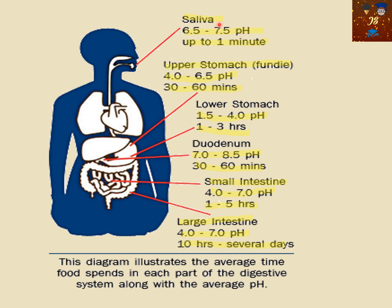For saliva, the pH is 6.5 to 7.5. The higher the pH, the more alkaline the solution — so saliva is slightly acidic in nature at 6.5. Food resides in the mouth for about one minute. From there, food comes to the upper stomach, called the fundus, where it resides for one hour at a pH of 4.0 to 6.5, which is acidic since it is below 7.